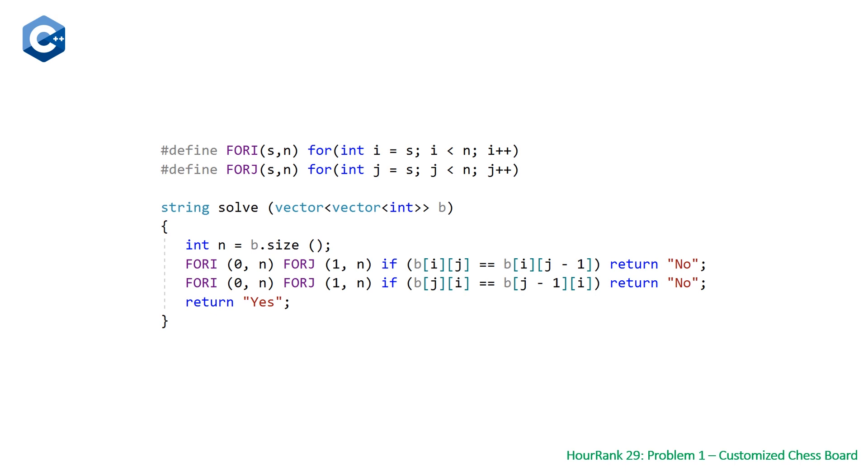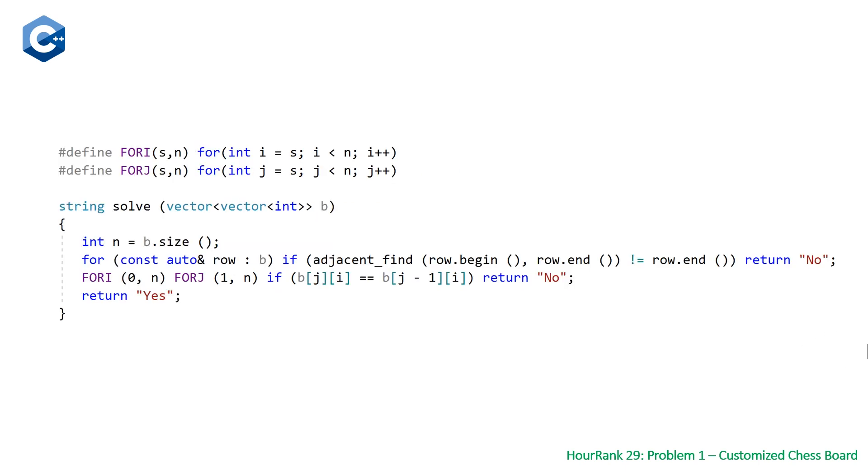It's worth noting that you can use an algorithm at least for the first loop. And that's using the adjacent find algorithm. So this basically does exactly what you'd think - it finds any two elements that are equal to each other. So if this returns past the last element, that means it didn't find any.